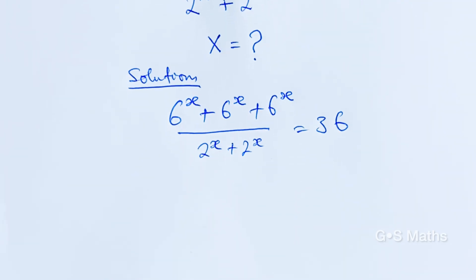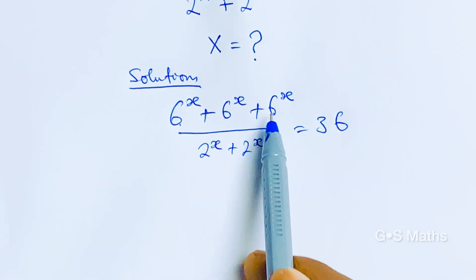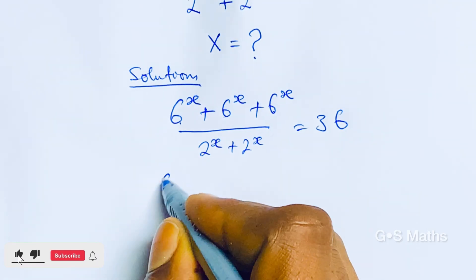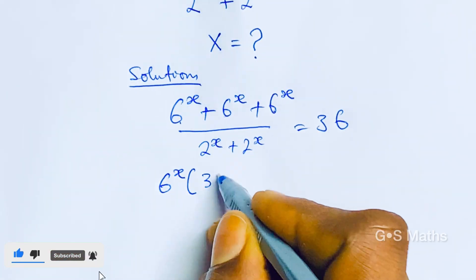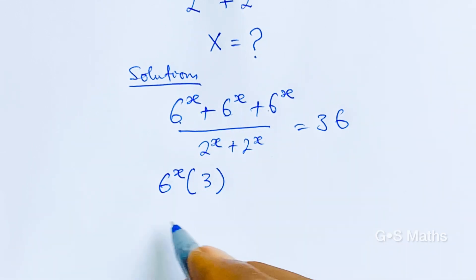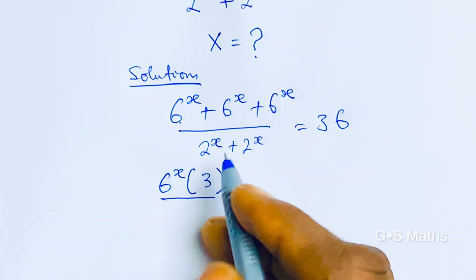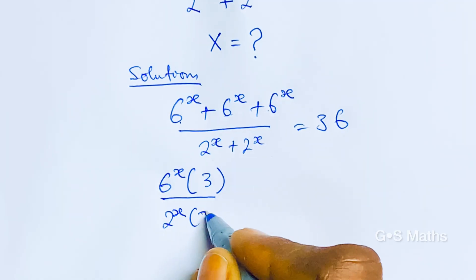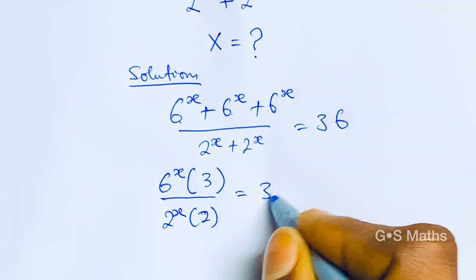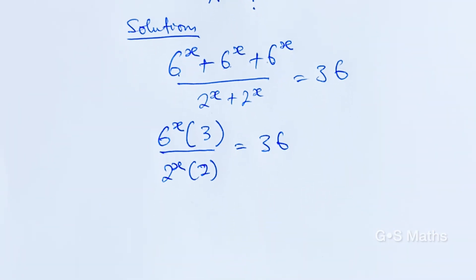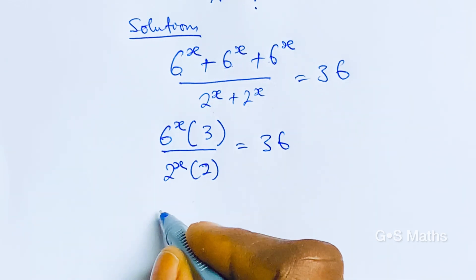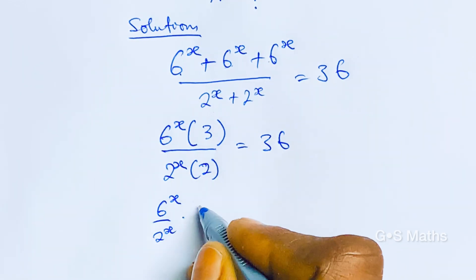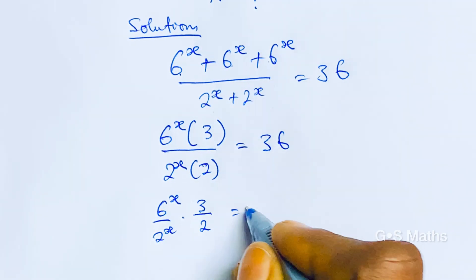Looking at this, all we have to do is count: this is 1, 2, 3, and this is 3. So we just pick one of them. This gives us 6 to the power of x, bracket of 3, because this is 1 to 3 places, divided by 2 to the power of x — we write this as 2 to the power of x, this is 1, 2 — and this is 2, is equal to 36.